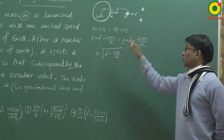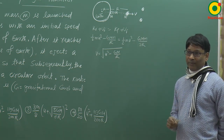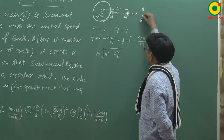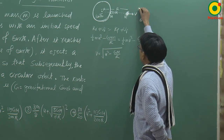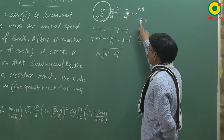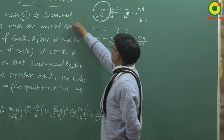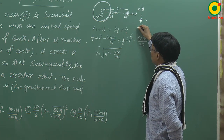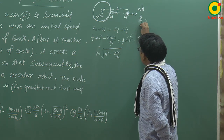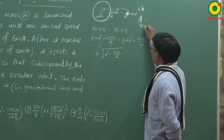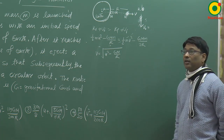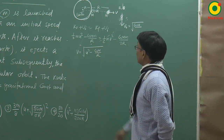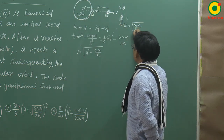At height R, the satellite divides into two parts — one is the rocket and the remaining part is the satellite. As soon as it divides, the remaining satellite starts circular motion. For circular orbit, the velocity must be in the tangential direction. The satellite's velocity in the tangential direction must equal the orbital velocity, which is √(GM/2R), since the orbital radius is 2R from the centre.